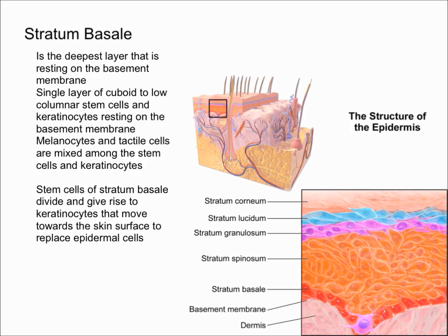We're going to start with the bottommost layer, the layer that's closest to the dermis, which is the stratum basale. Over here you can see the red cells representing that layer. It's the deepest layer, resting on the basement membrane, and it's a single layer of keratinocytes resting on the basement membrane.